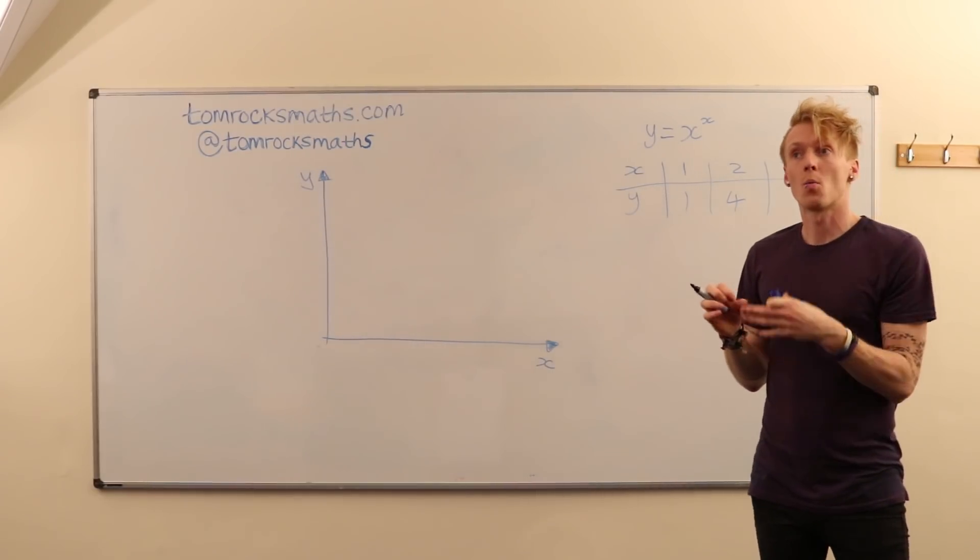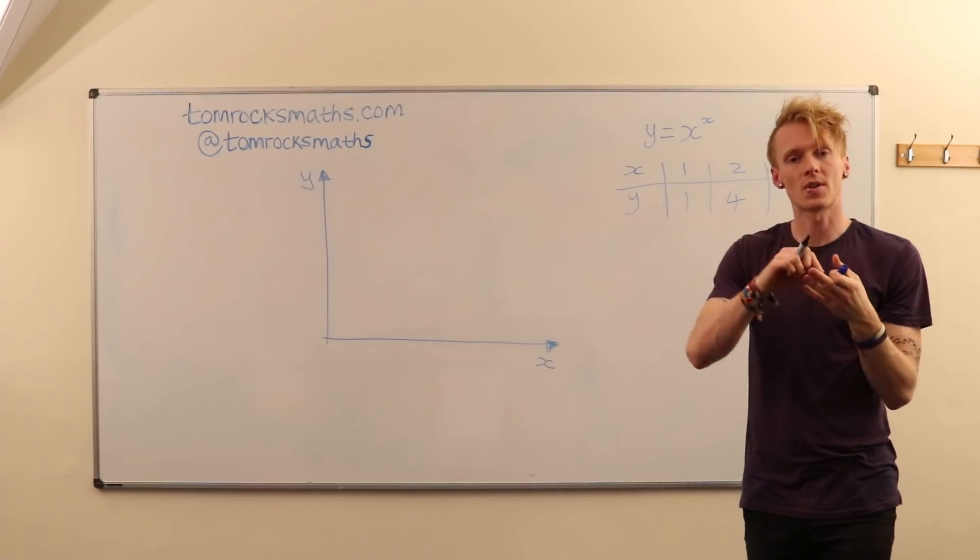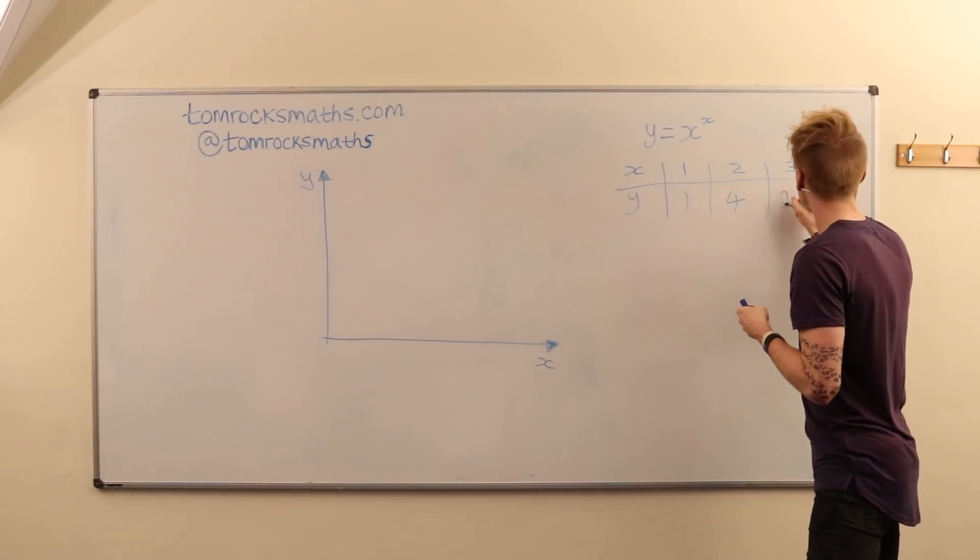Where x is 3, y will be 3 to the power 3, which is 3 cubed, which is 3 times 3 times 3, which is 27.